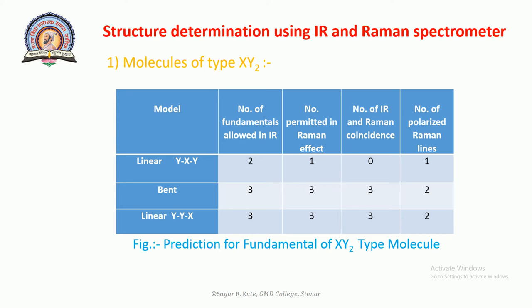We may consider sulfur dioxide SO2 as an example of bent symmetrical XY2. All three fundamentals are observed both in IR and Raman. In the Raman spectrum, the symmetric stretching and bending vibrations are found to be polarized, whereas the asymmetric stretching vibration is depolarized. Thus the observations confirm the prediction from the table, including the bent symmetric structure of SO2.